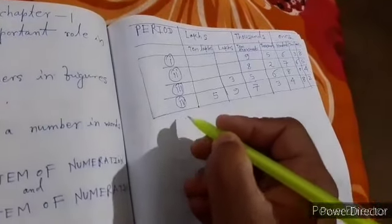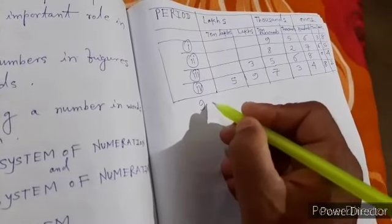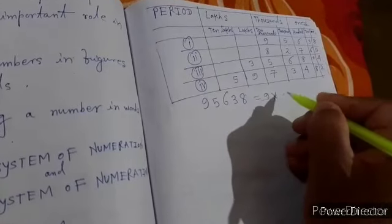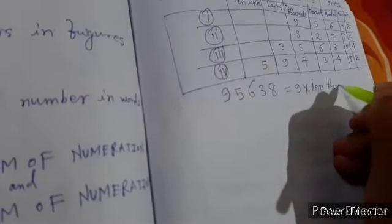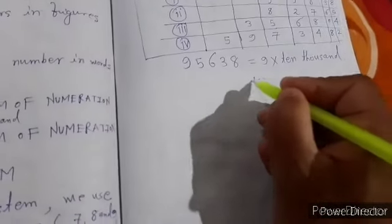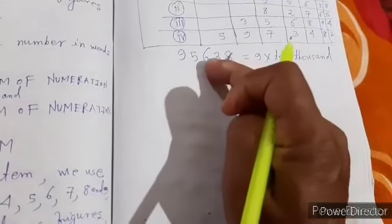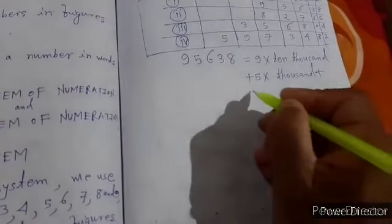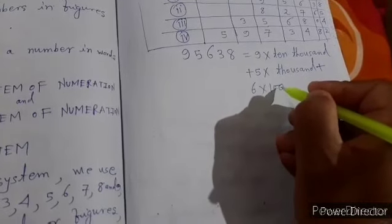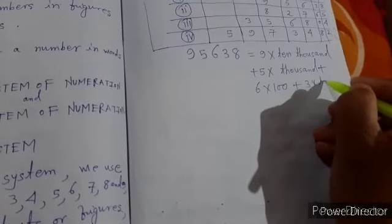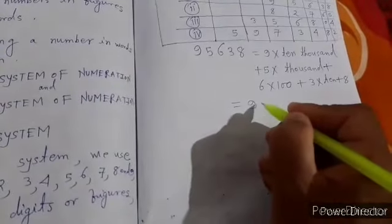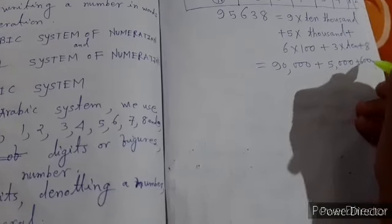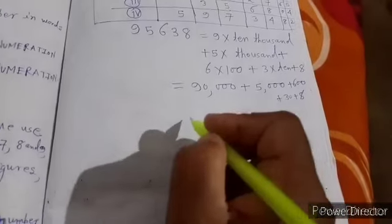we write question 1 in the expanded form. The number is 95,638 equals 9 times 10,000 plus 5 times 1,000 plus 6 times 100 plus 3 times 10 plus 8. That means 90,000 plus 5,000 plus 600 plus 30 plus 8.